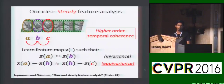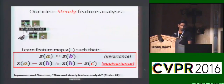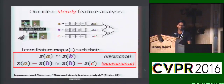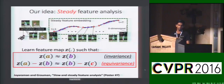Equivariance basically means that your feature representations are going to respond in systematic and predictable ways to specific image transformations. So we take unlabeled videos, pass them through a Siamese triplet neural network to learn our steady representations. If training is successful, the representation would look something like this, where the frames of a video traverse a smooth path through your feature space.